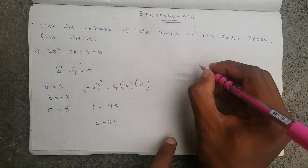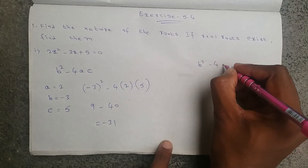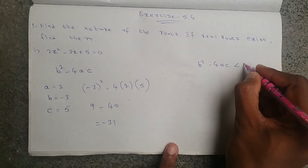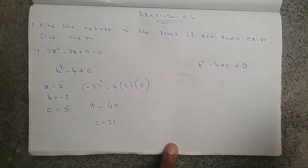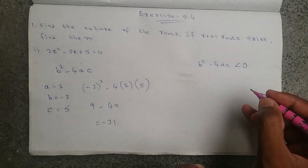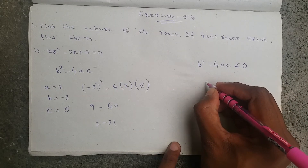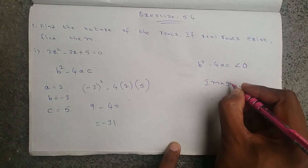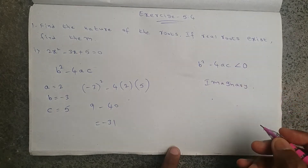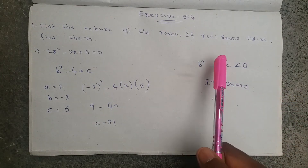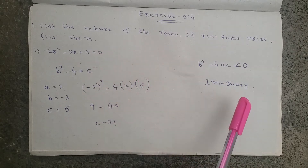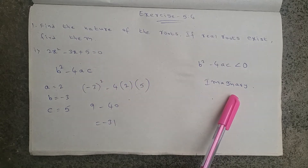So in this case we got b² - 4ac value less than 0. If b² - 4ac is less than 0, then the roots are imaginary roots. Here he said clearly: if real roots exist, then only we need to find those zeros. Here both zeros are imaginary, so no need to find those zeros.